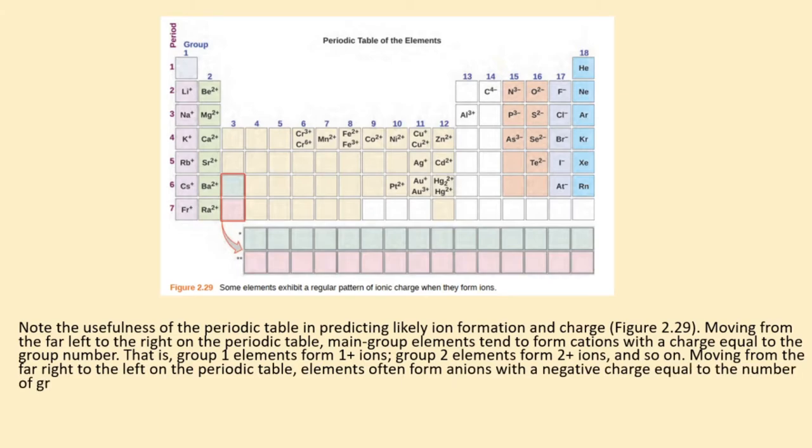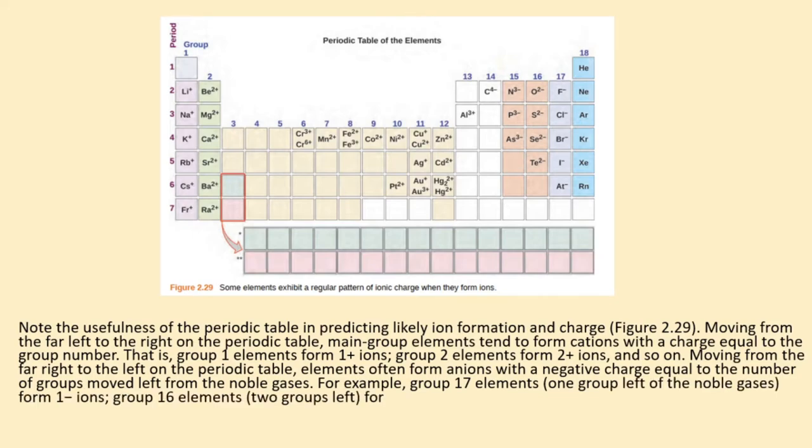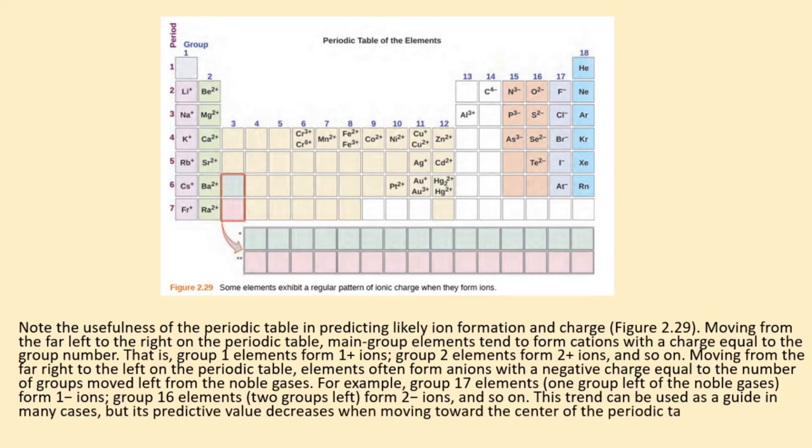Moving from the far right to the left on the periodic table, elements often form anions with a negative charge equal to the number of groups moved left from the noble gases. For example, group 17 elements, one group left of the noble gases, form 1- ions, group 16 elements, two groups left, form 2- ions, and so on.